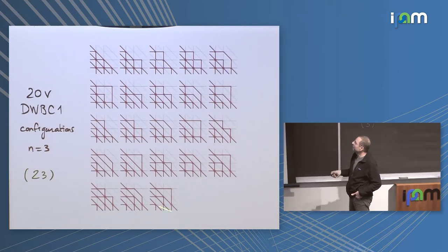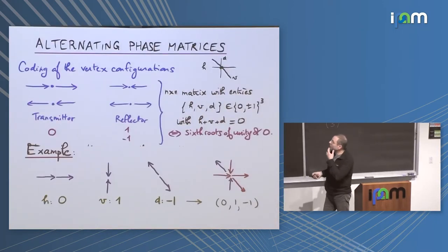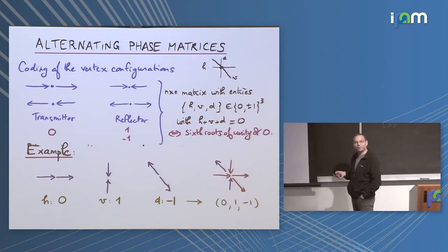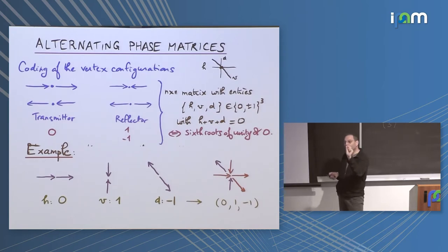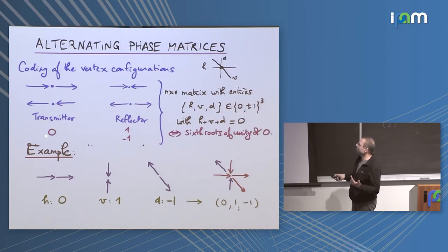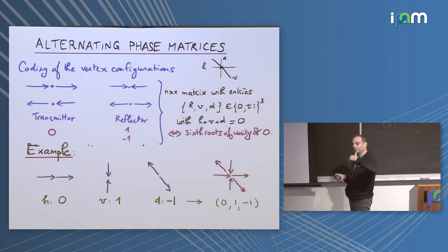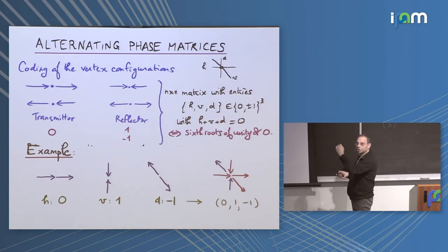So these are the 23 domain-wall type 1 and 2 boundary condition configurations for this 20-vertex model of size 3. Now, alternating phase matrices. The way alternating sign matrices were constructed starting from six-vertex configurations was by deciding whether a vertex was transmitting or reflecting. Here the same thing, but we have three directions. For each direction, whenever it's transmitting I attach a 0, and when it's reflecting a 1 or a minus 1, with the same rules as before. So a priori I have triples of integers taking values 0, 1, and −1 — one for each direction.